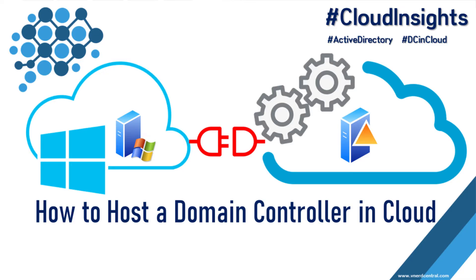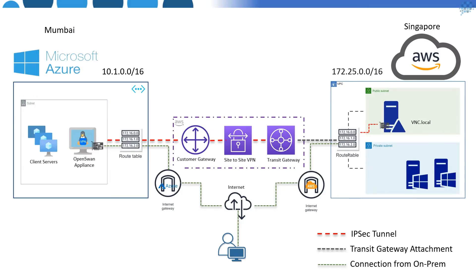Hello everyone, welcome to another video of Cloud Insights. In this video I'm going to show you how to host a domain controller in the cloud. In the previous video I showed you how to create a site-to-site VPN between multi-cloud from Azure to AWS using Transit Gateway as a router and OpenSwan as a VPN. I'm going to use the same setup to demonstrate this video. I thought it would be very interesting to try and host a domain controller in AWS.